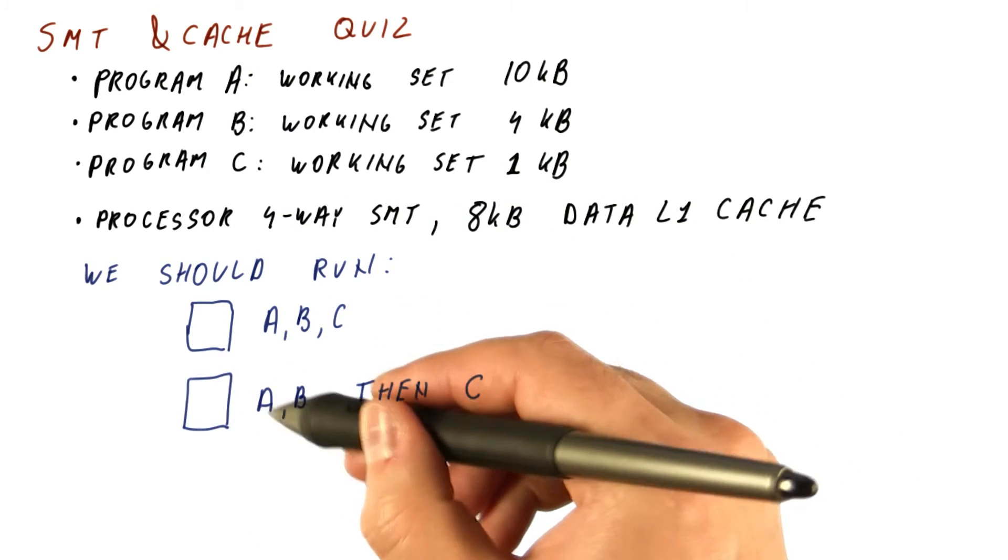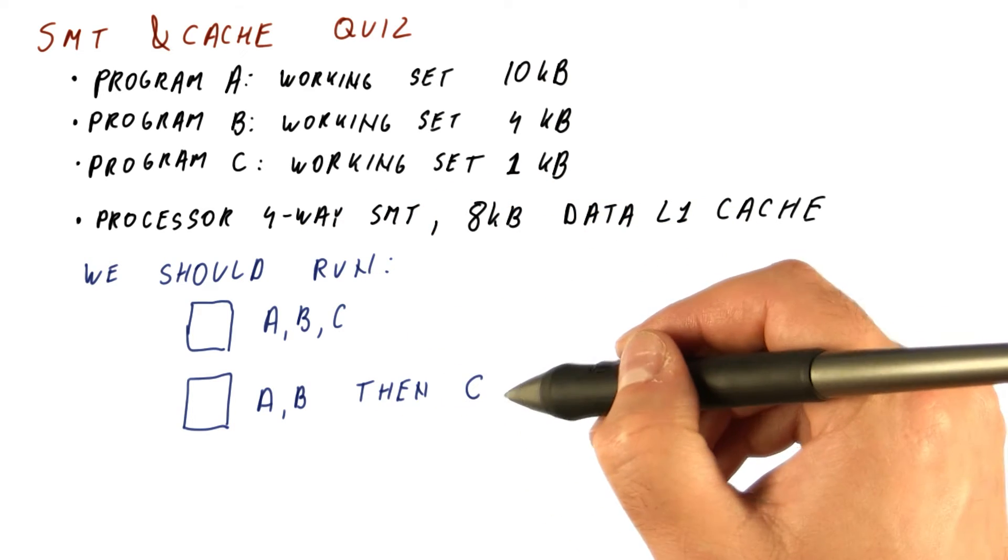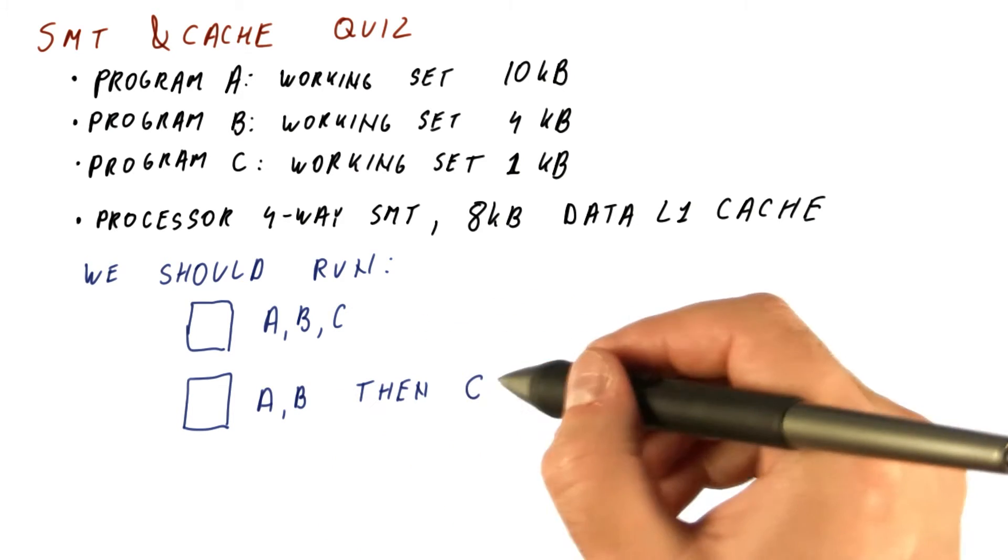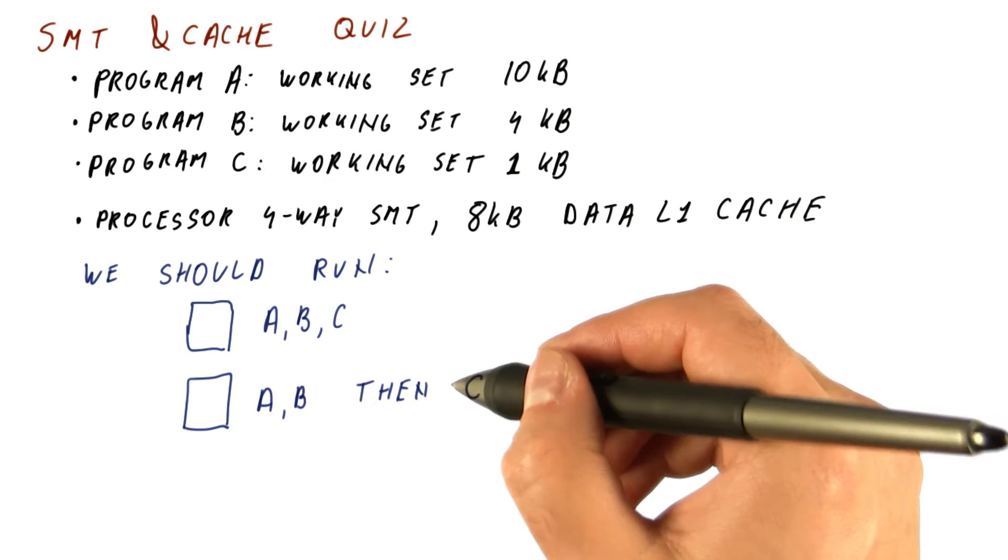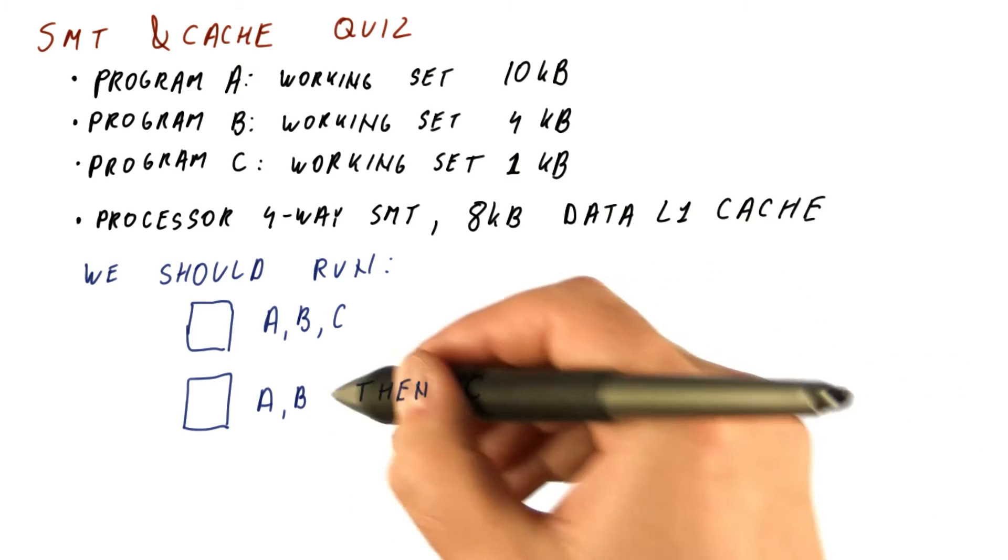A and B together, we could run C simultaneously, but we choose to run it after we finish A and B. Or we do A and B for a while, then C for a while, and so on. Pretty much we don't run them simultaneously. We run C separately from the other two.